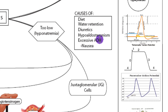Lastly, if there's a problem with the posterior pituitary — there could be trauma or something like that — so you're making too much ADH, you'll take up too much water and this will dilute the sodium and cause hyponatremia. For some reason, nausea also increases ADH production, and this can dilute out the sodium.